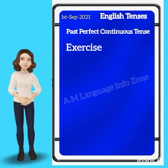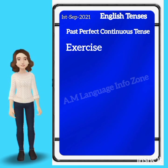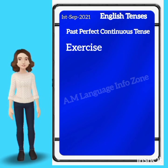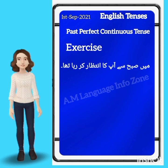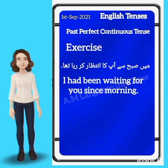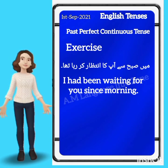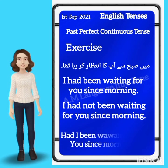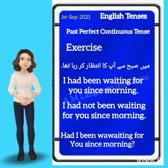One thing to note: pronounce 'been' correctly. Next sentence — Affirmative: 'I had been waiting for you since morning.' Negative: 'I had not been waiting for you since morning.' Interrogative: 'Had I been waiting for you since morning?'